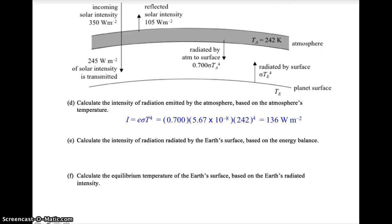Next, we find the intensity of radiation radiated by the Earth's surface based upon energy balance. Note, we cannot use this equation to find the intensity radiated by the Earth. Why can't we use this equation? Because we don't yet know the temperature of the Earth. We're going to find it in part F.